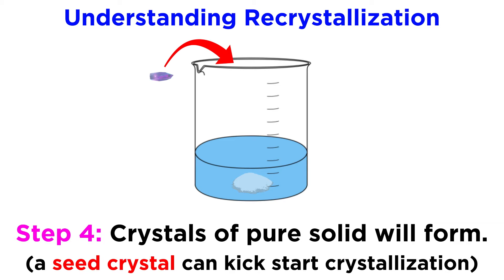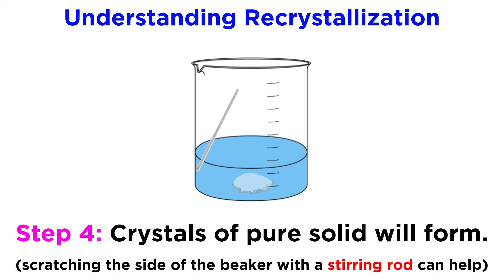If crystal formation is slow or difficult to initiate, we can use a seed crystal, whereby we add a little bit of the solid that is supposed to form, which provides a surface around which ions in solution can coordinate, and this will kickstart the crystallization process. This can also sometimes be done simply by scratching the side of the beaker with a stirring rod, as this will liberate a tiny amount of glass that can also provide seeding behavior.